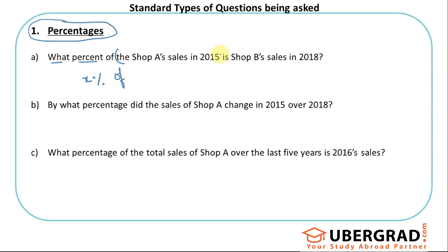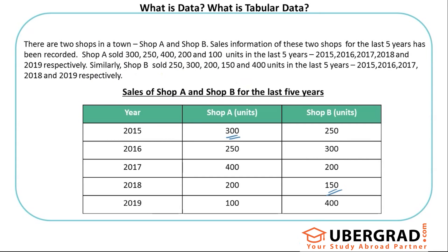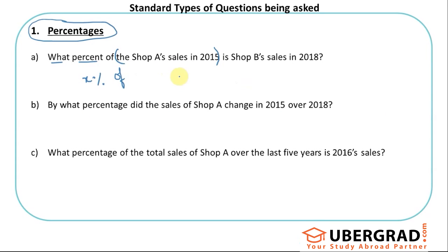So 'x percent of' — the Shop A sales in 2015 — is one value, basically 300. 'Is' or 'equals to' — Shop B sales in 2018 — that is also one value: 150. This is what the full statement looks like when converted to math.